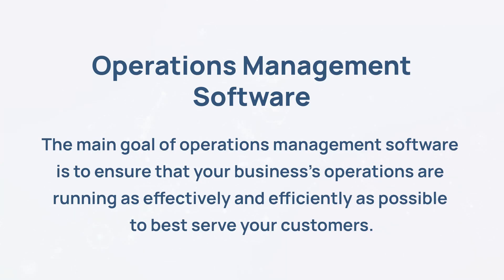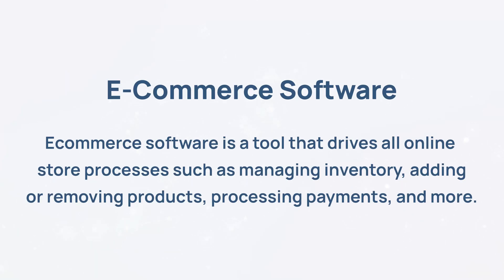Example number four: operations management software. The main goal of operations management software is to ensure that your business's operations are running as effectively and efficiently as possible to best serve your customers. Example number five: e-commerce software is a tool that drives all online store processes such as managing inventory, adding or removing products, processing payments, and more. Custom software development is limitless — these are just a few of many examples, and as a tailored solution, custom software can be designed to meet any needs that your business may have.